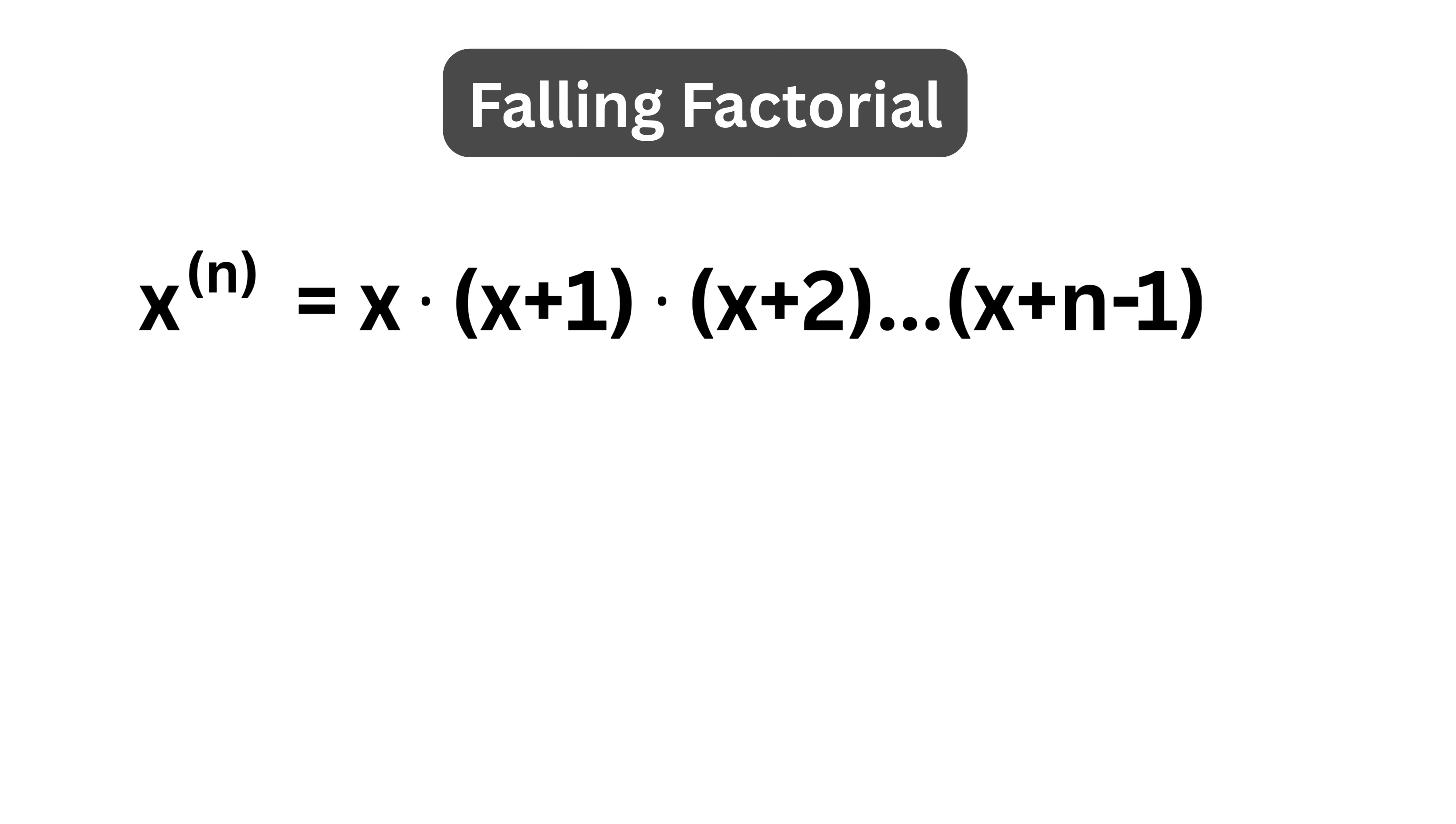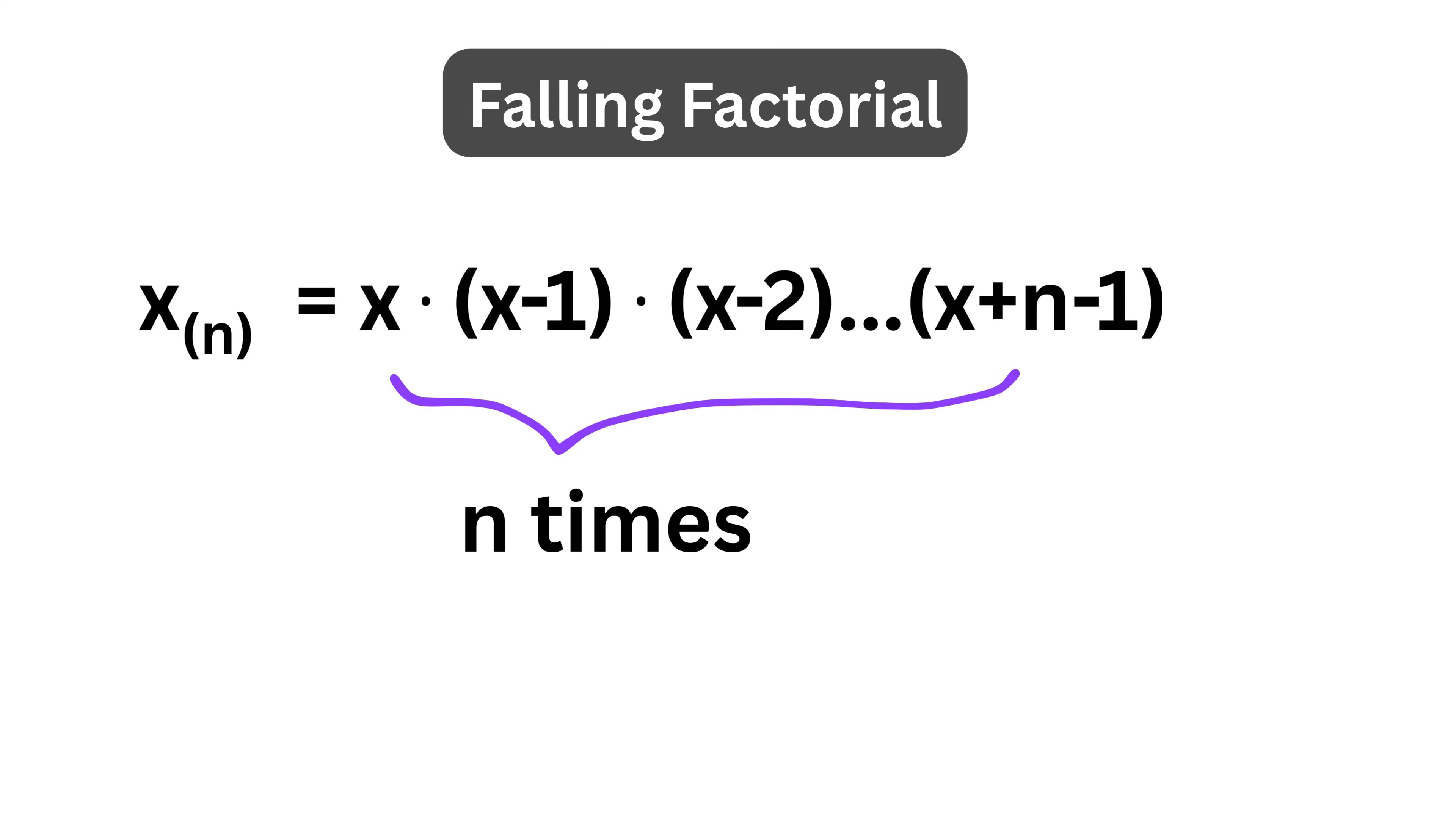Similarly, we have falling factorial, which is just the opposite of rising factorial. It means we multiply x times x minus 1 times x minus 2, and so on, until we do this n times in total.